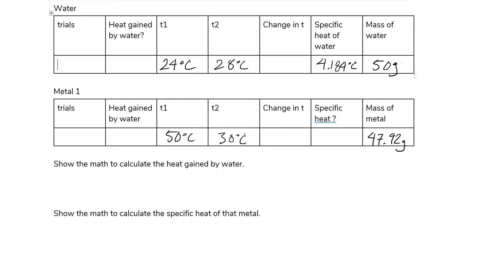So here it looks like I have all the data that I need. I have my initial temperature and my final temperature of the water and I have the specific heat of water. This is our constant, meaning this doesn't change.